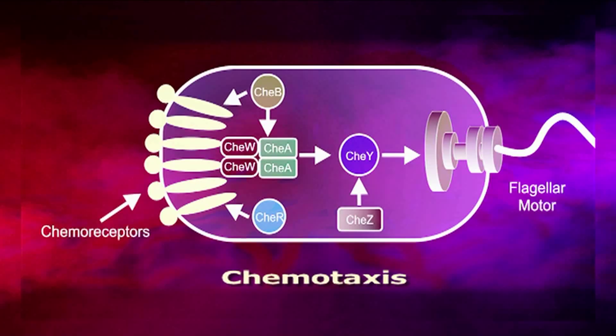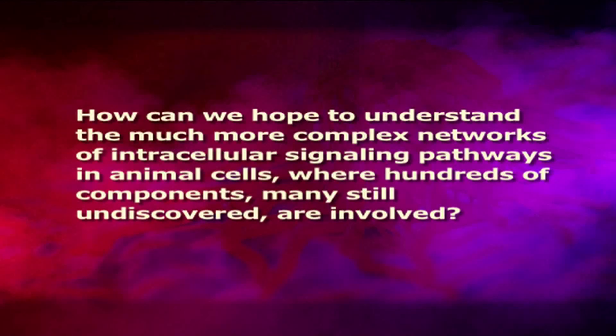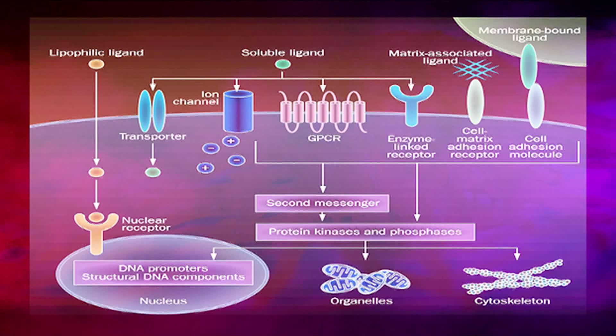The task of understanding how a cell manages this feat seems overwhelming, even in the relatively simple case of bacterial chemotaxis, where there are relatively few components, all of which are probably known. The complexities of the interactions are still too great to be easily visualized and completely understood at present. How can we hope to understand the much more complex network of intracellular signalling pathways in animal cells, where hundreds of components, many still undiscovered, are involved? The intracellular signalling pathways, seen as a whole, form a highly interconnected network in which signals are processed along multiple parallel routes that interact with one another. One can therefore learn about the behaviour of signalling networks by comparing them to other highly interconnected networks.